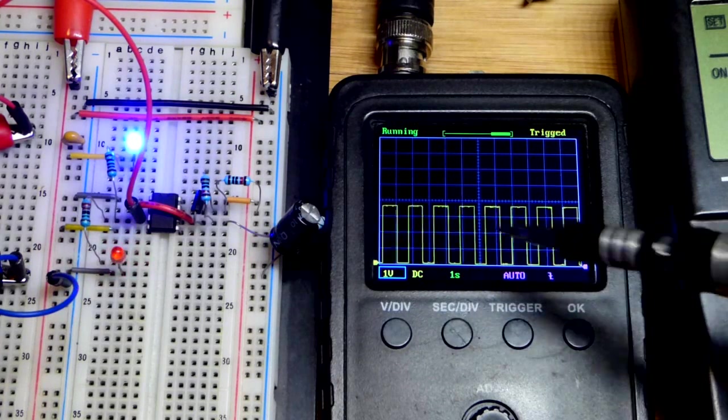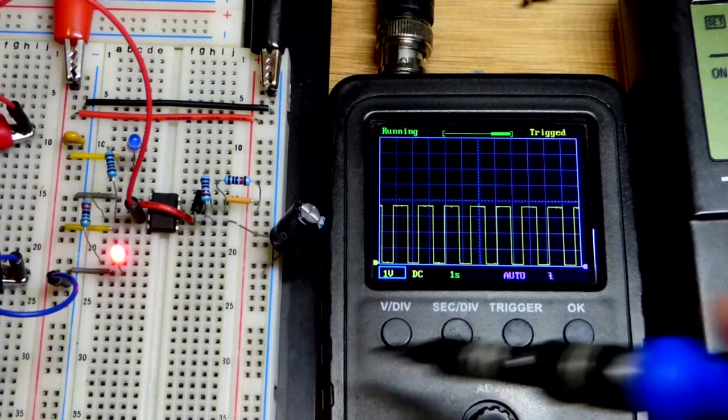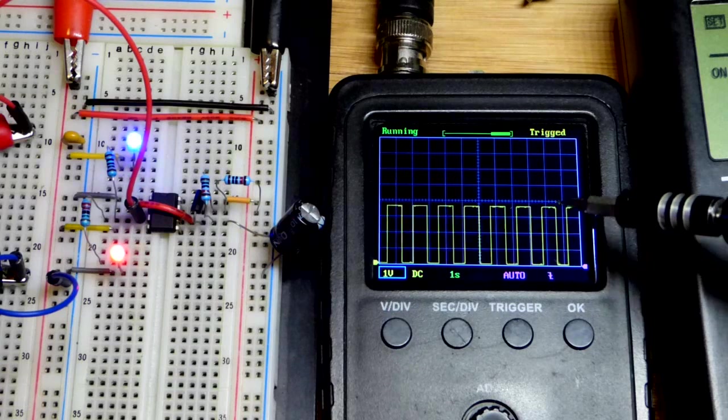As you can see, the output keeps going high and low. When the output goes high, the red LED lights up. When the output goes low, the blue LED lights up.